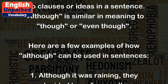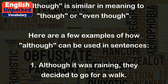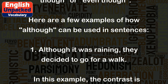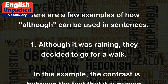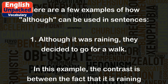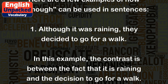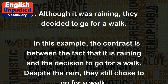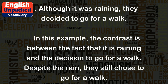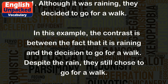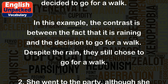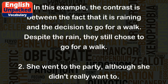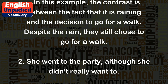Here are a few examples of how 'although' can be used in sentences. 1. Although it was raining, they decided to go for a walk. In this example, the contrast is between the fact that it is raining and the decision to go for a walk. Despite the rain, they still chose to go for a walk.